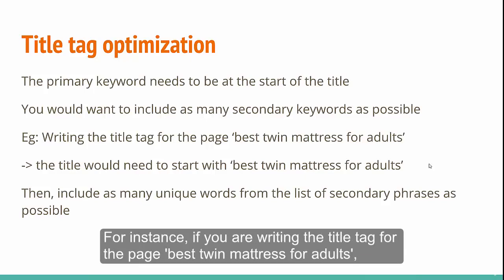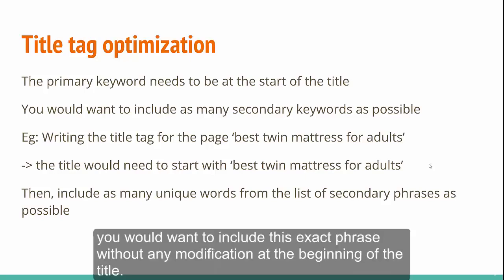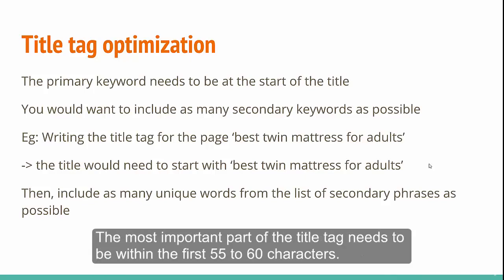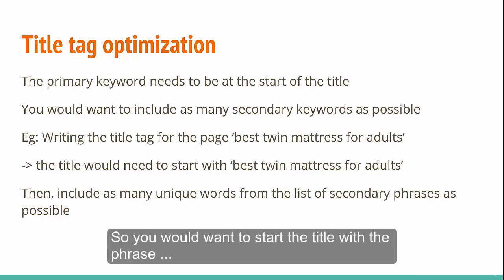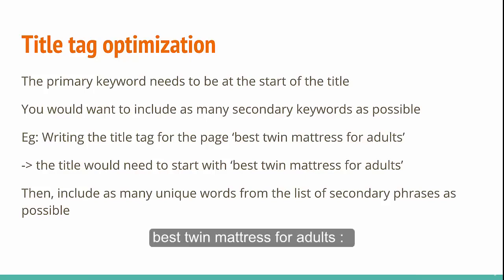For instance, if you are writing the title tag for the page 'best twin mattresses for adults', you would want to include this exact phrase without any modification at the beginning of the title. The most important part of the title tag needs to be within the first 55 to 60 characters, as the portion beyond 60 characters will most likely not be displayed by search engines. So you would want to start the title with the phrase 'best twin mattress for adults'.